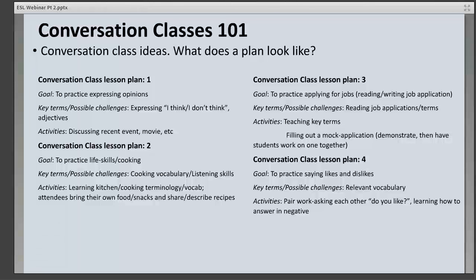Example — Lesson Plan 1: Goal: help people learn to express opinions. Key vocabulary: phrases like 'I think' or 'I don't think,' plus adjectives. Activity: discuss a movie, watch a YouTube clip, or talk about a recent event. Lesson Plan 3: Goal: practice applying for jobs and career enhancement. Key terms: job application and employment-related vocabulary. Activities: run through key vocabulary, demonstrate filling out a mock application, and have students do a mock interview with each other cooperatively.